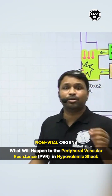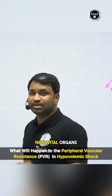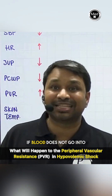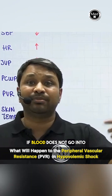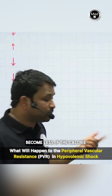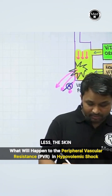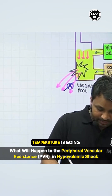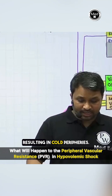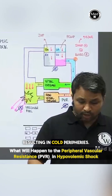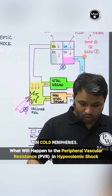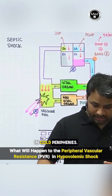Skin is an example of a non-vital organ, and blood flow is responsible for heat generation. If blood flow to the skin is reduced, heat generation will decrease. As a result, skin temperature falls, hence resulting in cold peripheries.